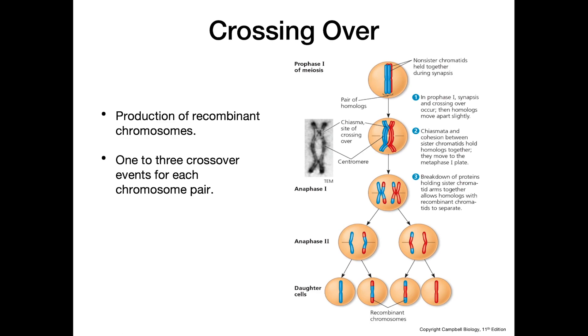There are one to three crossover events for each chromosome pair, and again, this occurs during prophase one of meiosis.